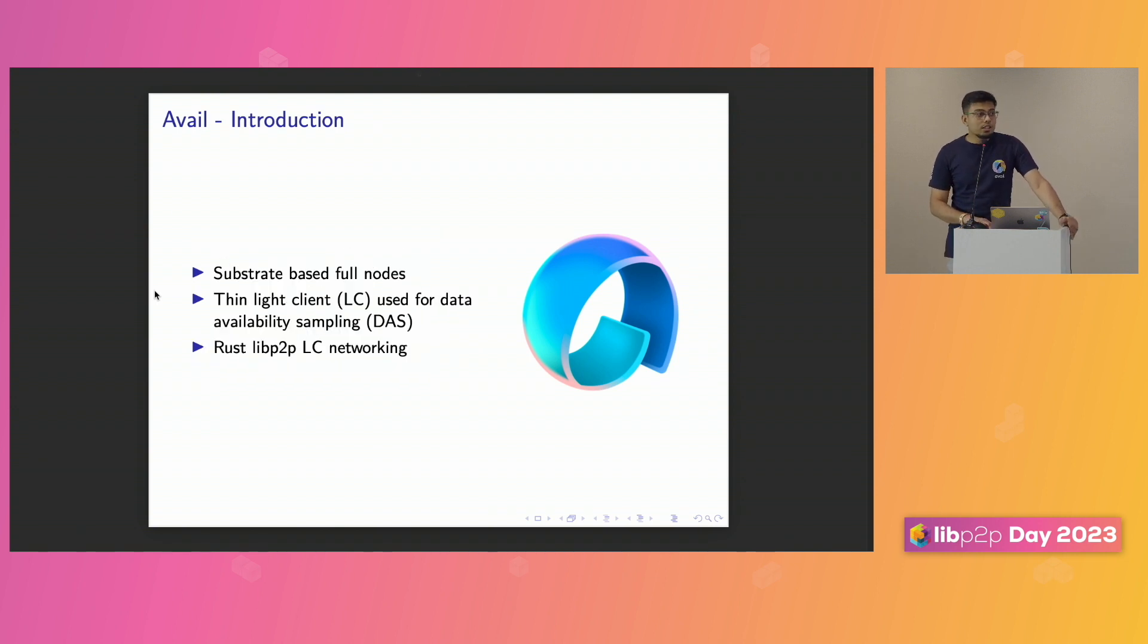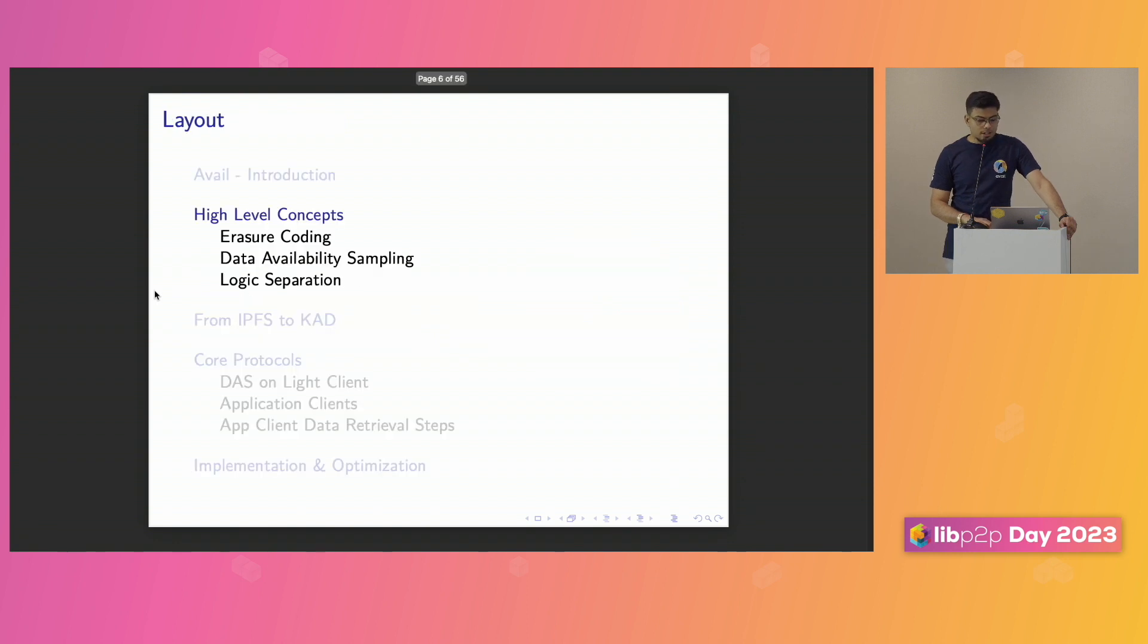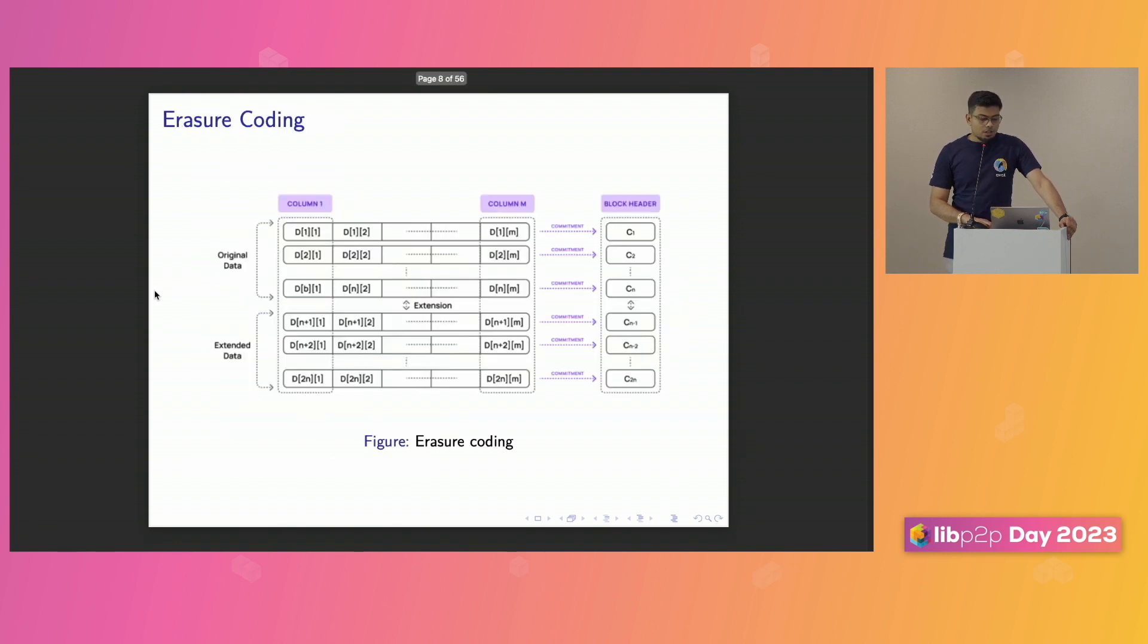How we build it? It's based on Substrate. We use that as the base layer, so the entire stack is built on Rust, starting from the blockchain node to the light clients. The light client is mainly used for data availability sampling and making sure that we can ask every user of any of the chains which are running on Avail to have the same level of security as if they are running a full node. And we use the Rust version of the libp2p for the networking stack.